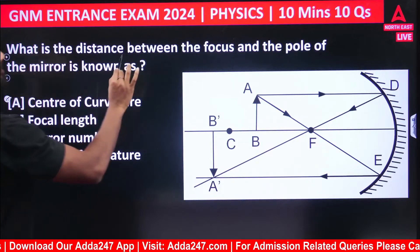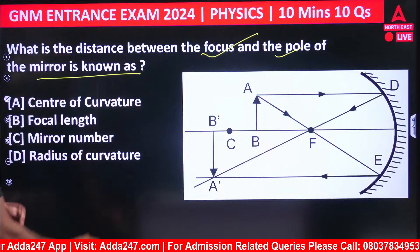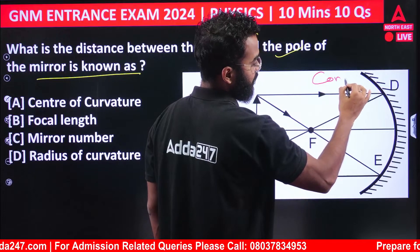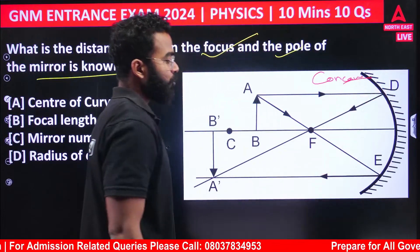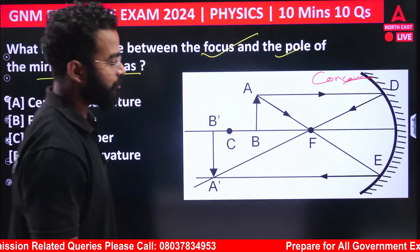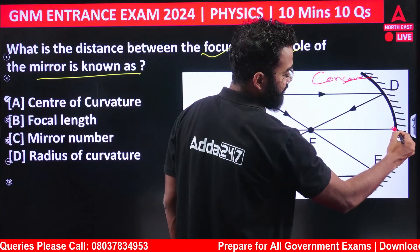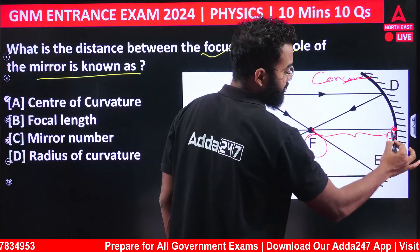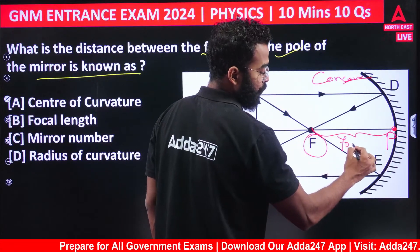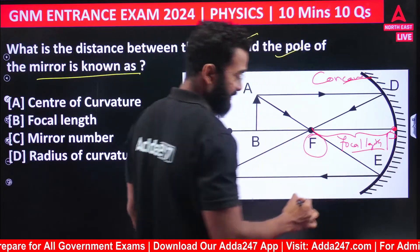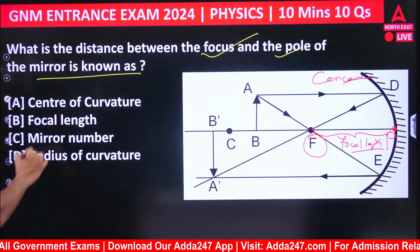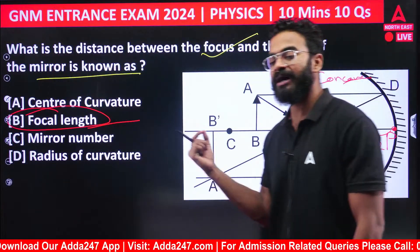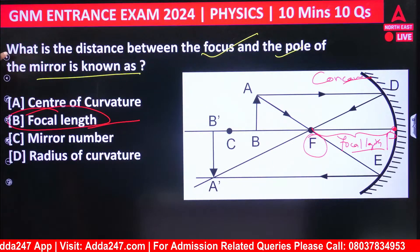Next question: what is the distance between the focus and the pole of a mirror known as? In a concave mirror, the distance from the pole to the focus is called the focal length. Focal length is the correct answer — option B is correct.